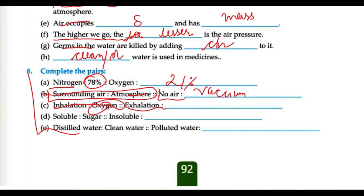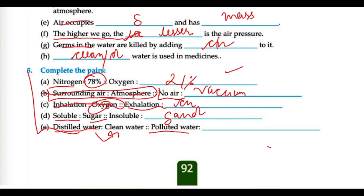Next: soluble example is sugar, so what is insoluble? We can write sand. And distilled water means clean water — what do we call dirty water? We call it polluted water.